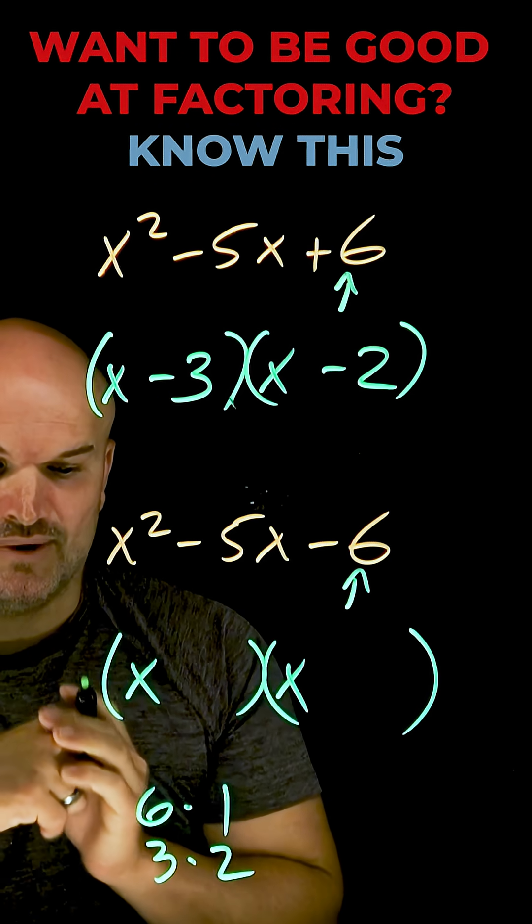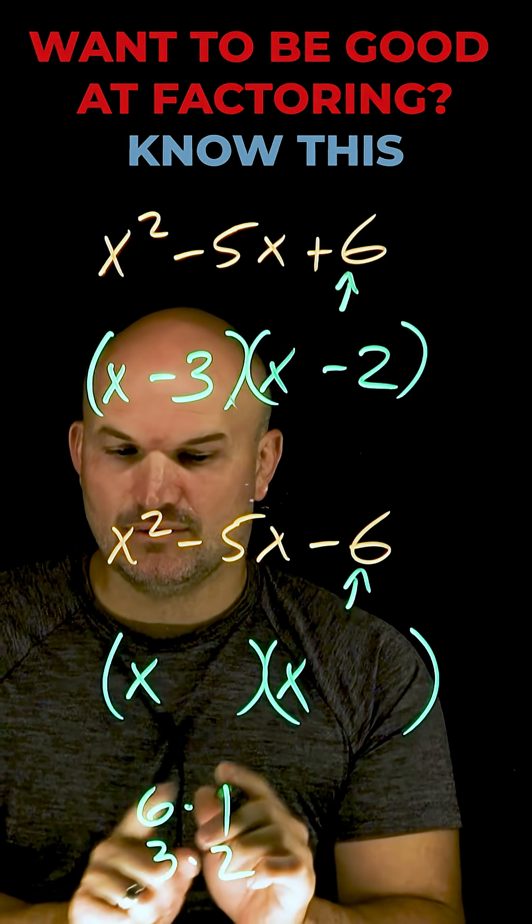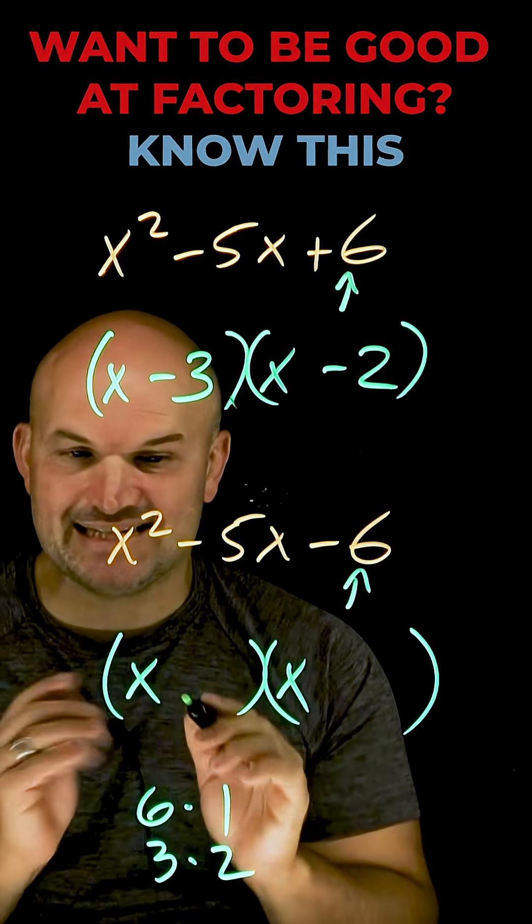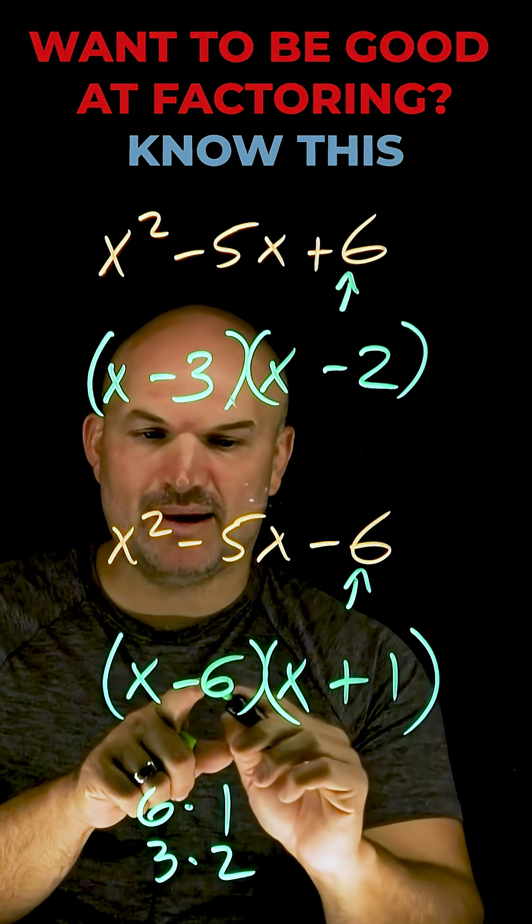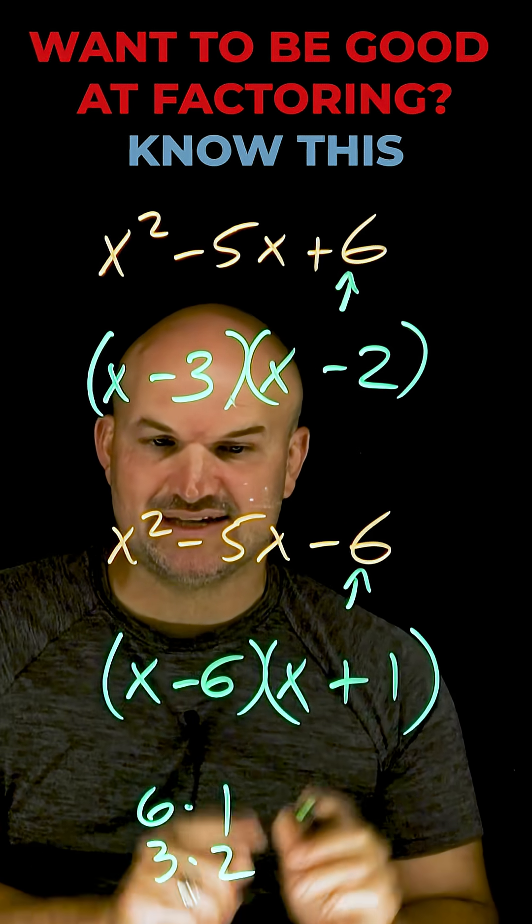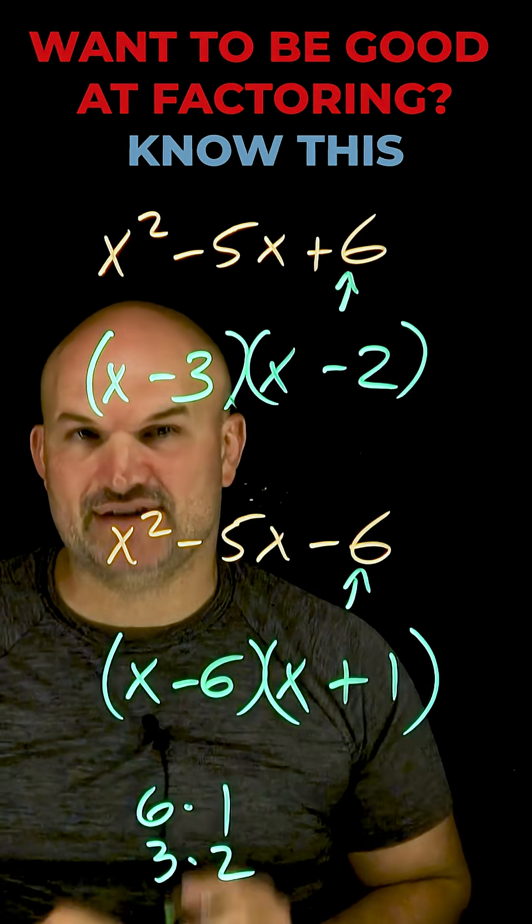But again, it's negative. So which one needs to be negative? Is it negative six and one or negative one and six? Hopefully, you see, it has to be the x minus six and a positive one. But again, remember, these two multiply to give us a negative six, but then they have a difference here of negative five.